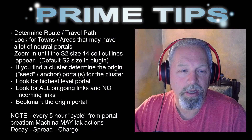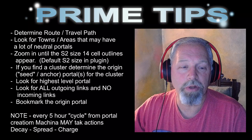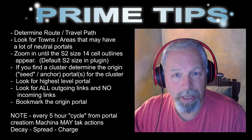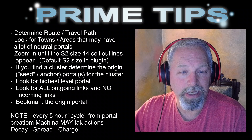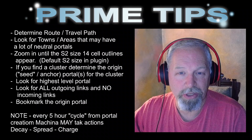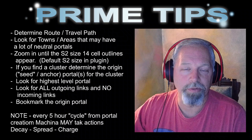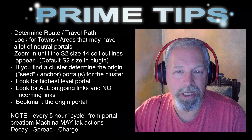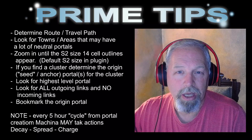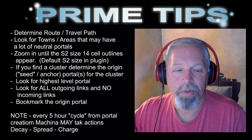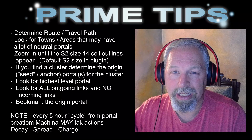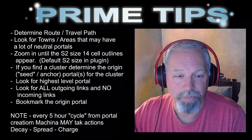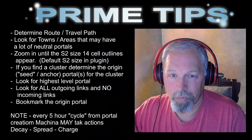Once you get into a town, zoom until the S2 size 14 cell outlines appear. By default when you put that plugin in, it will have the size 14 cells set up as a green outline. I don't want to get too deep into what S2 cells are — they're used for determining MU and mapping coordinates — but in this case they're really handy to tell you: if you're at the right zoom and not seeing any red portals, they're probably not there.